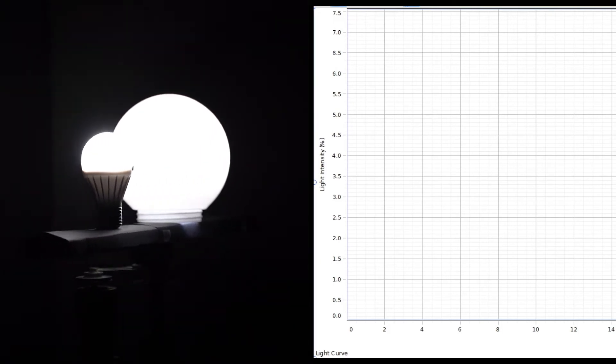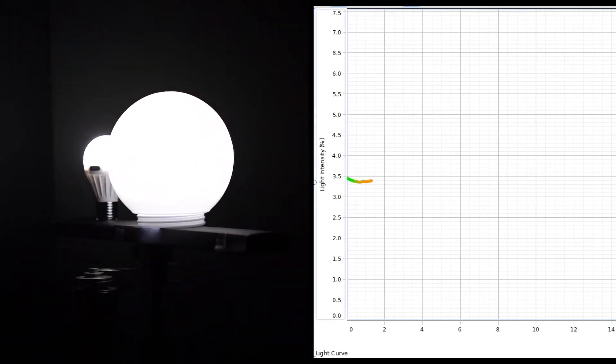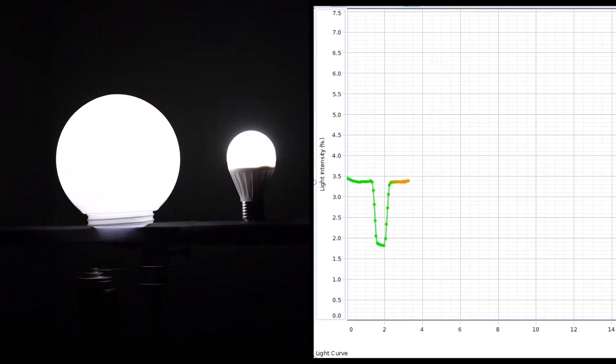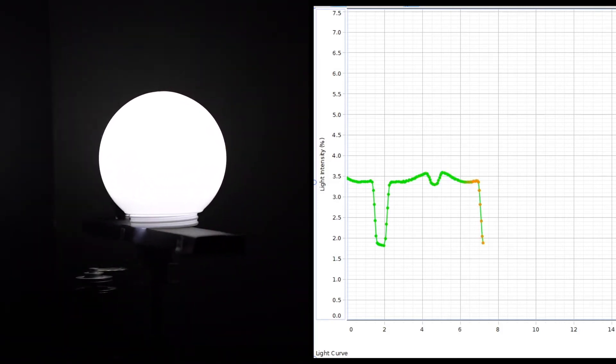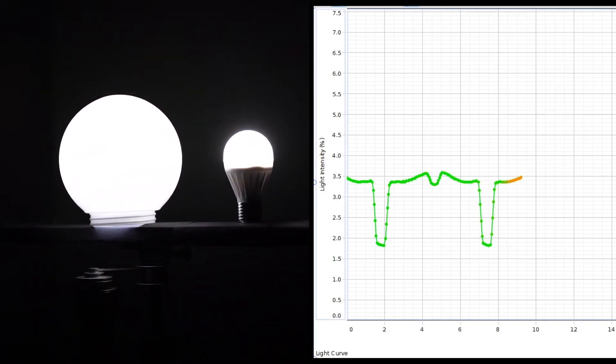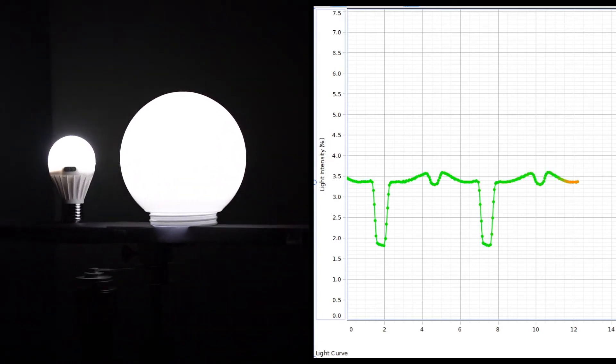We now see that the graph of intensity versus time has eclipses with uneven depths, as expected. But note that both eclipses now have flat bottoms, as it takes a longer time for the globe, or larger star, to transit the smaller bulb, or smaller star.